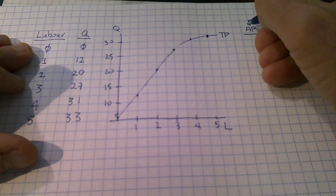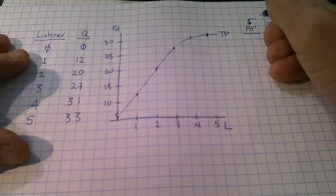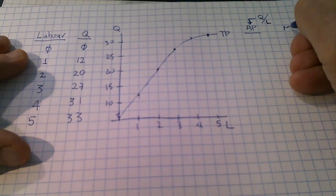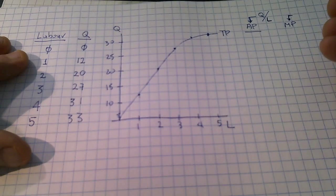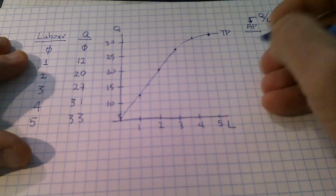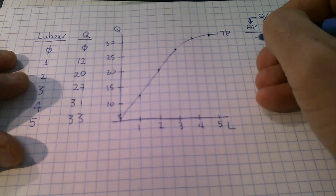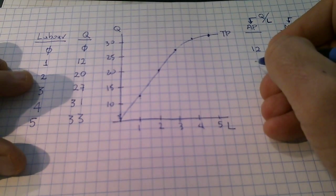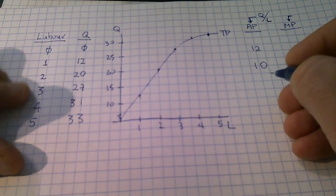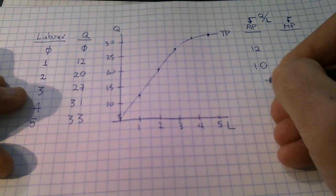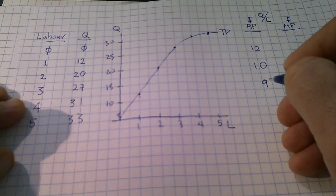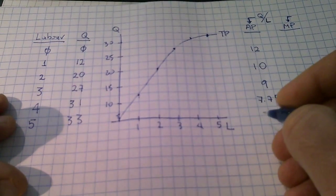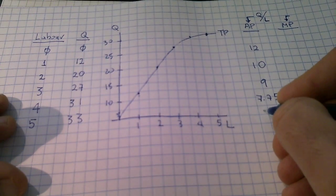Average productivity is the average productivity of your workforce — basically the amount of widgets produced divided by labor. Marginal productivity is the additional output produced from an extra unit of worker. So: 12 divided by 1 is 12, 20 divided by 2 is 10, 27 divided by 3 is 9, 31 divided by 4 is 7.75, and 33 divided by 5 is 6.6.